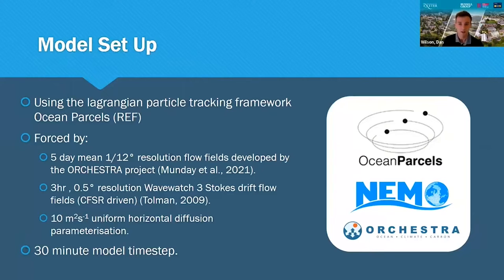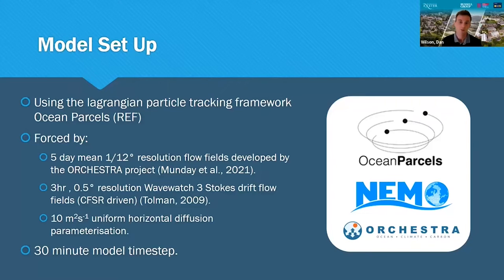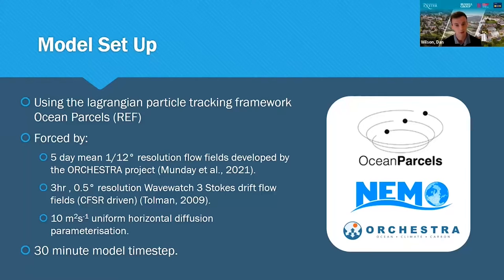To tackle this question, we're utilizing the Lagrangian particle tracking framework Ocean Parcels, forced with ocean velocity fields from a Southern Ocean configuration of the NEMO LIMB3 model with one-twelfth degree horizontal resolution and 75 variable depth z-levels, developed by the ORCHESTRA project. When particles are at the ocean surface, they're also forced with three-hour, 0.5-degree resolution Stokes drift flow fields from the WaveWatch 3 project. We're applying a horizontal diffusion parameterization of up to 10 meters squared per second, and sensitivity testing has suggested that inclusion of Stokes drift results in a net southward and eastward push on particles.